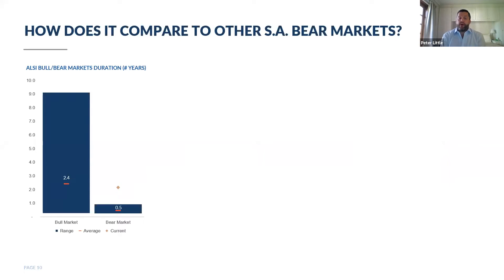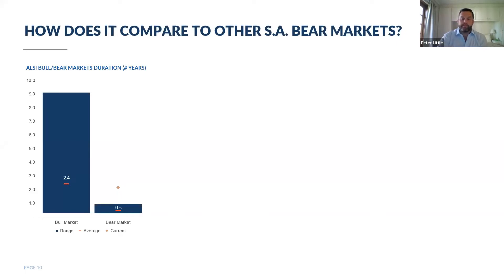Switching to the South African market — looking at similar stats, we only have about 25 years of data for the local All Share Index. We've had eight bull and bear markets in the last 25 years in South Africa; it took about 55 years in the US to achieve the same number. The frequency of these cycles is a lot quicker in South Africa. On average, bull markets last two and a half years and bear markets last about six months. The current bear market is by far the longest we've experienced — markets peaked in January 2018, so it's been over two years.